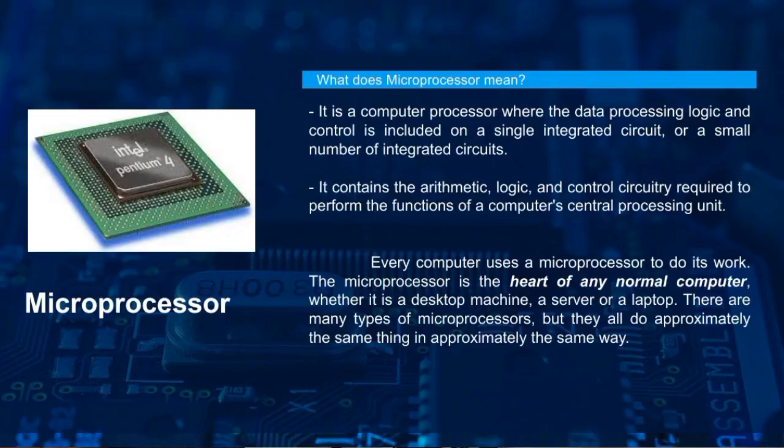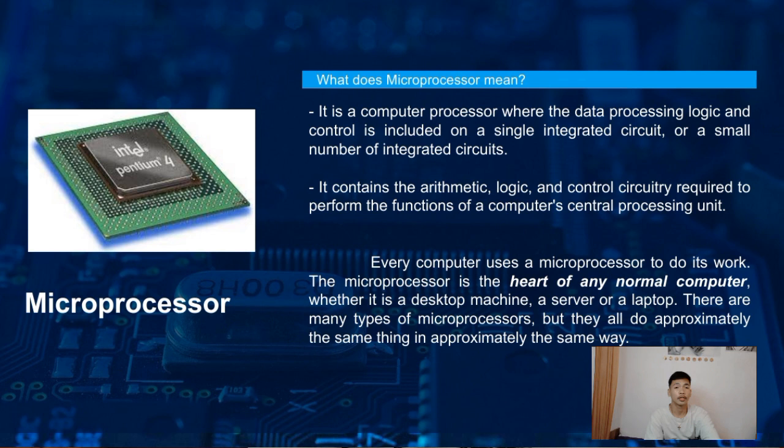My first topic is all about the microprocessor. So what does microprocessor mean? It is a computer processor where the data processing logic and control is included in a single integrated circuit or a small number of integrated circuits. It contains the arithmetic, logic, and control circuitry required to perform the functions of a computer's central processing unit.